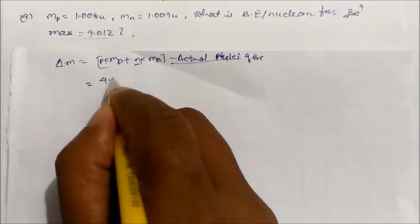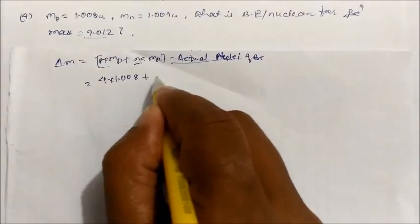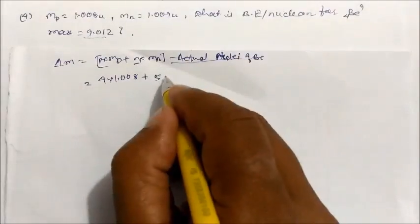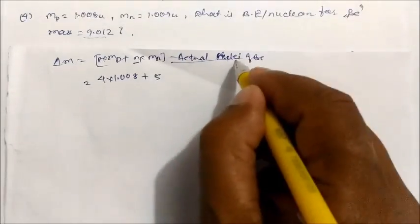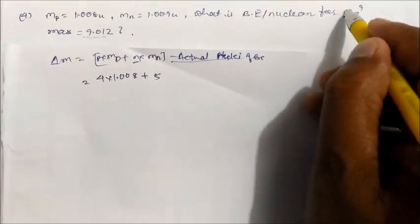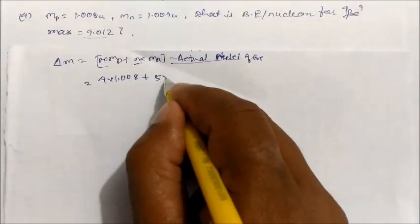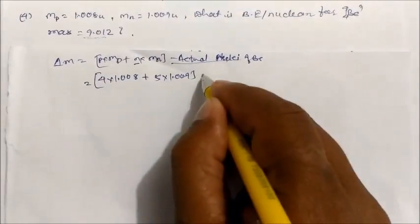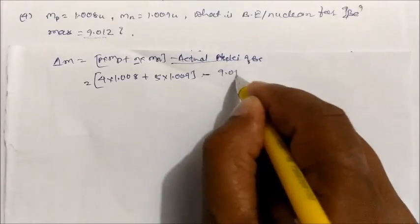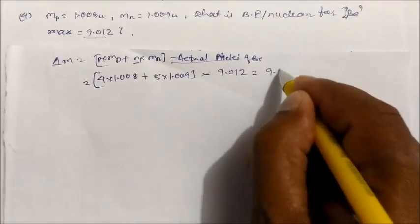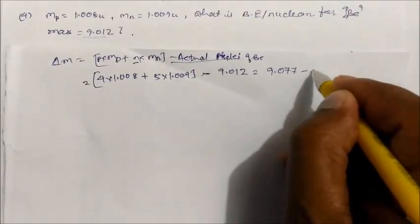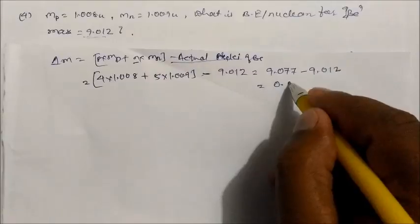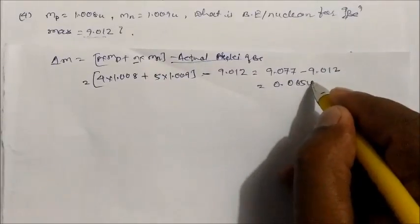Substituting: 4 × 1.008 for protons, and for neutrons we have 5 neutrons (since mass number 9 minus atomic number 4 gives 5), so 5 × 1.009. Subtracting actual mass 9.012 u. On solving: mass defect = 9.077 − 9.012 = 0.065 u.